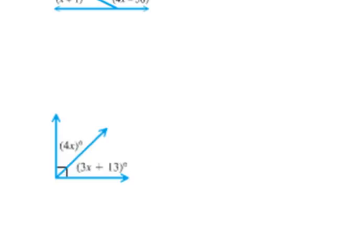Well if these two angles have to add together to be 90 degrees, we can use that fact to set up our equation. We could say that 4x, which is the first angle here, added to the second angle, which is 3x plus 13, those things added together have to be 90 degrees because they are complementary.